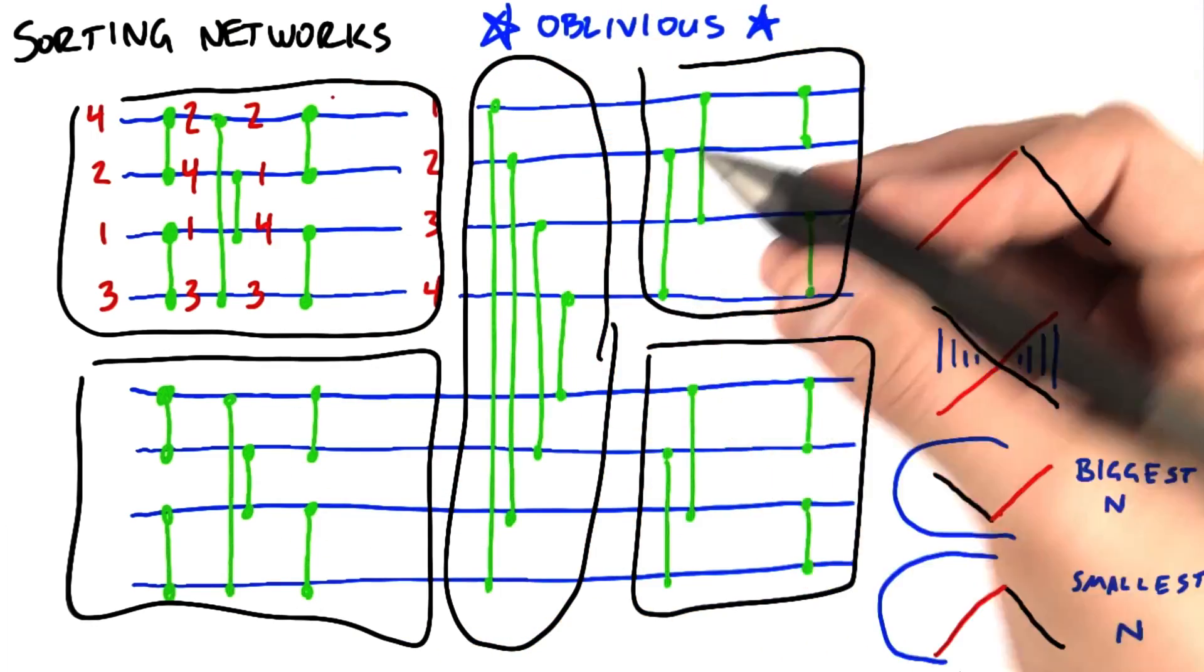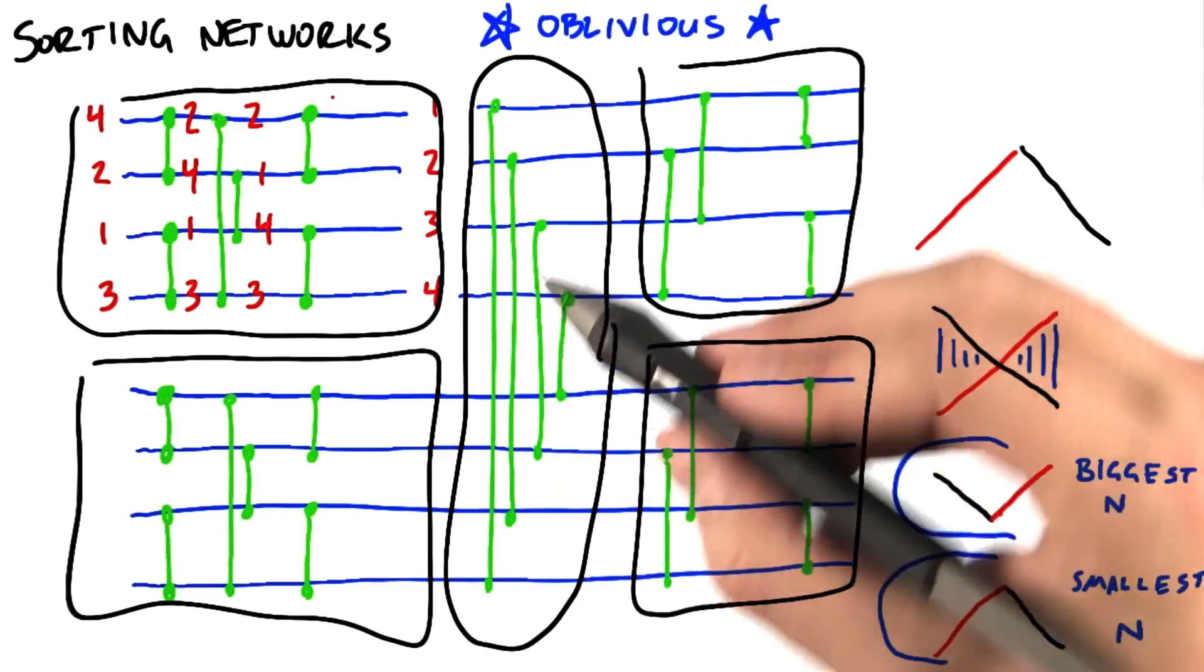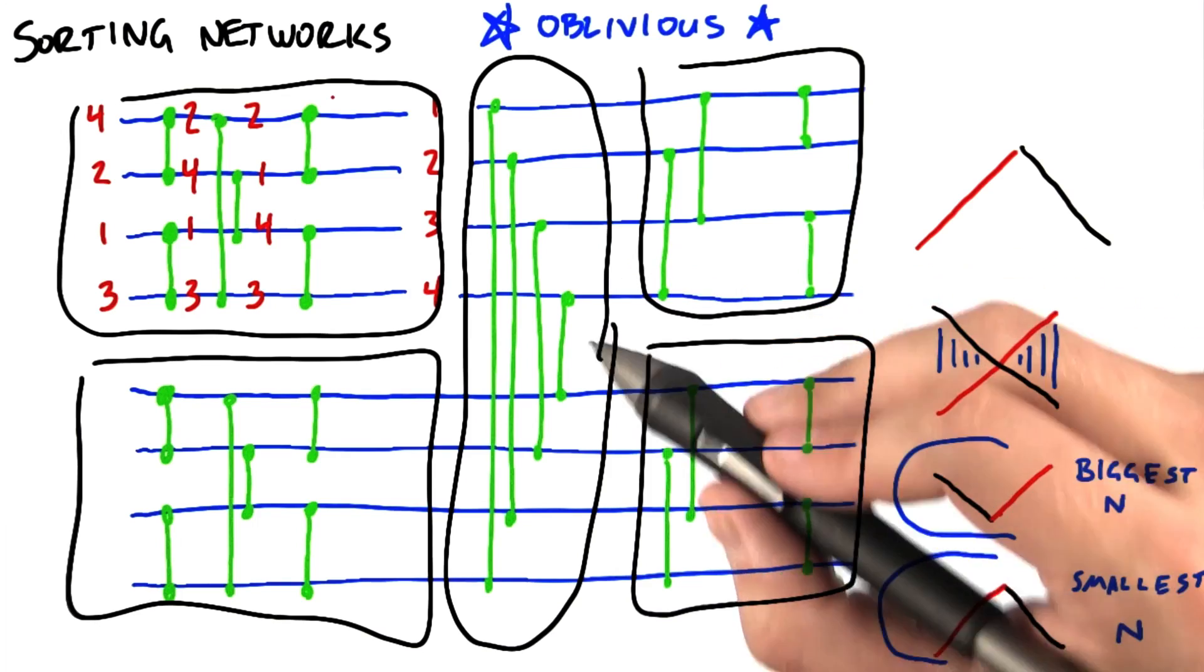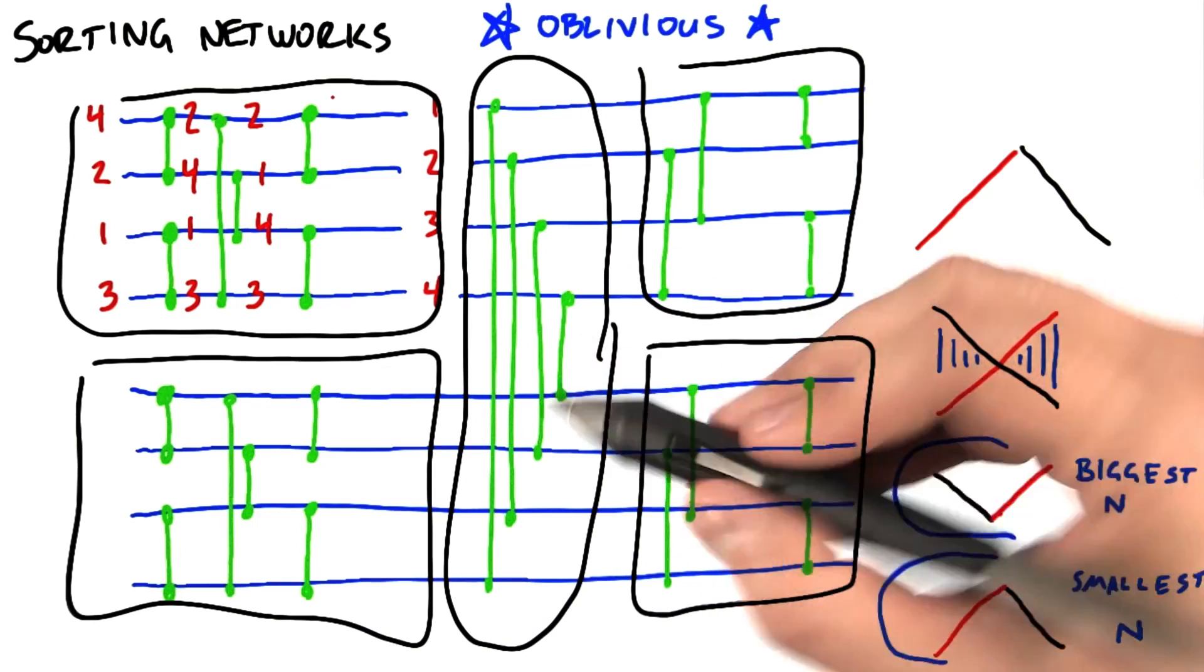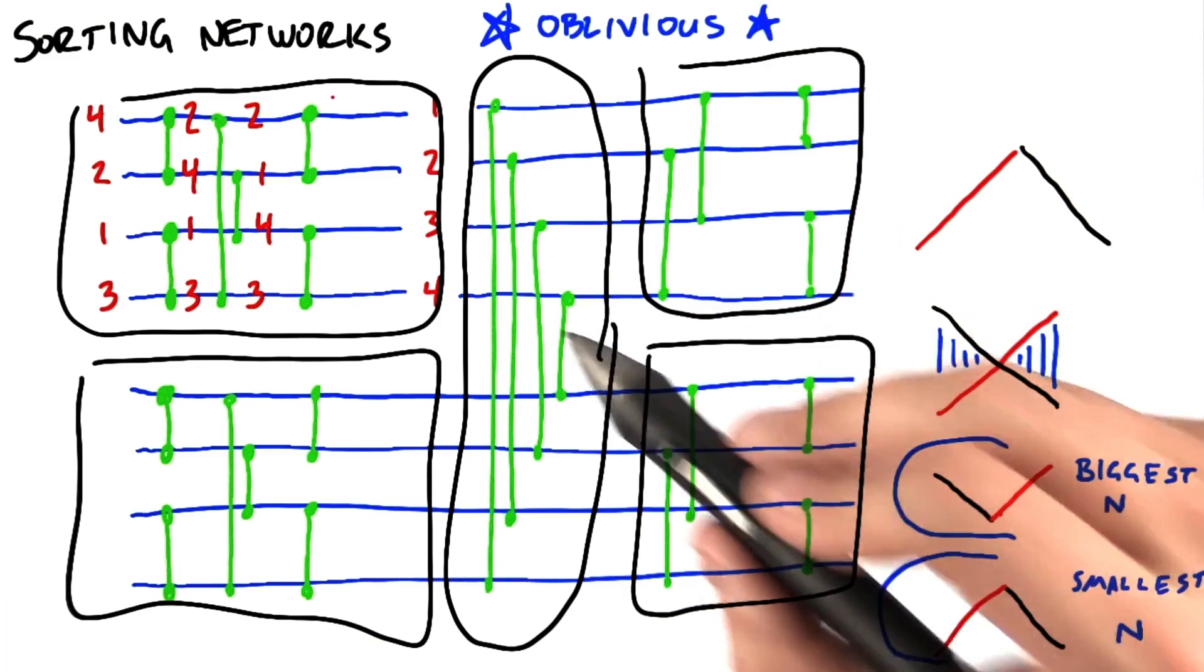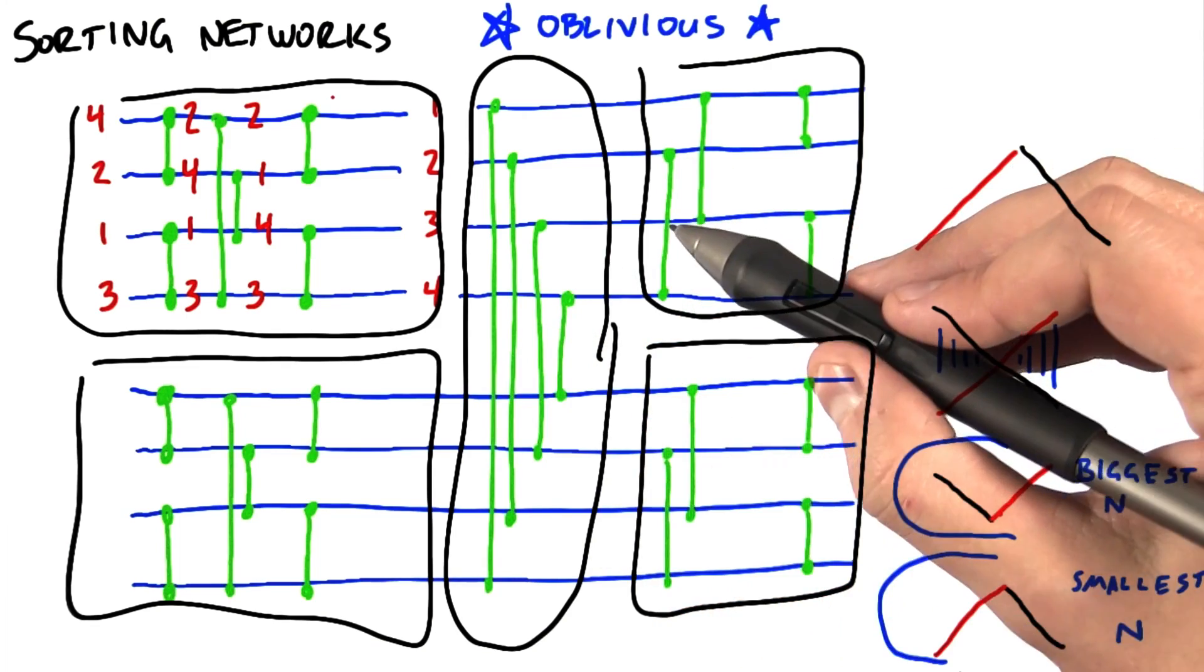So just a couple notes on the computation itself. One, if the input set is small enough to fit into shared memory, then a sorting network is actually a very efficient way to sort that input set. In fact, many sorting algorithms that start by sorting small blocks of data, like merge sort, use a sorting network to do their sorts within a block.